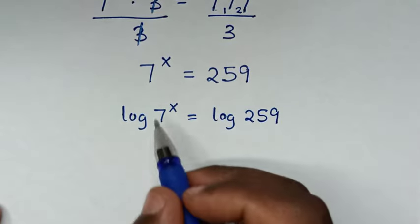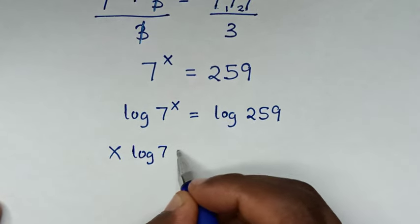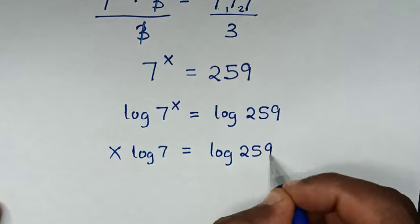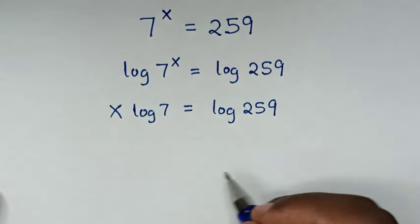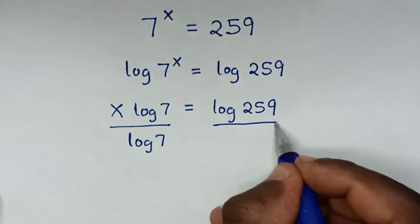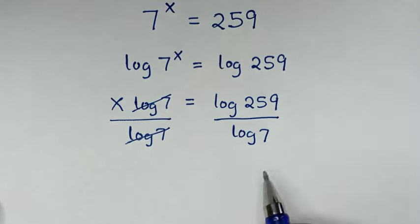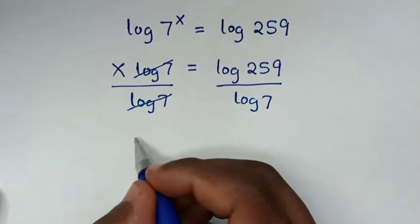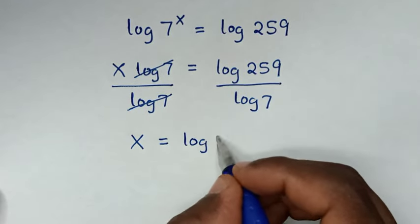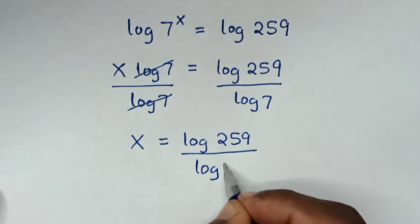Then this power x will move to the front. So it will be x times log of 7 is equal to log of 259. Then we divide by log of 7 on both sides, so log of 7 and log of 7 will cancel. Then it will be x is equal to log of 259 over log of 7.